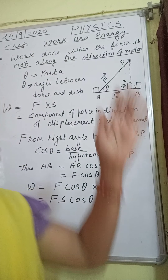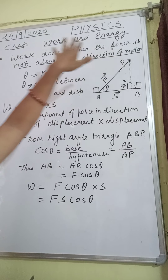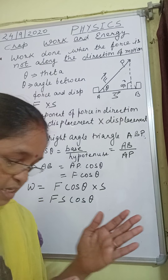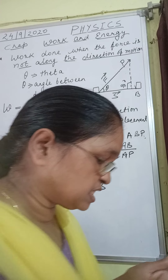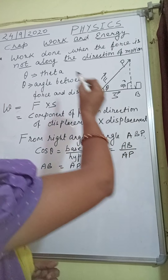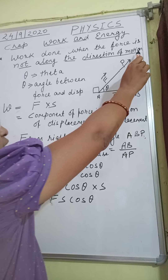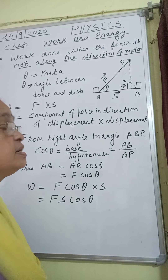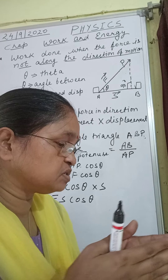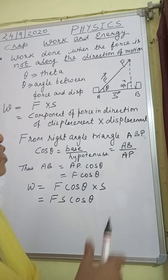Today I will teach you work done when the force is not along the direction of motion. I am applying force in one direction and moving in the same direction, but what happens when the body is moving not along the direction of the applied force — that is, the motion of the body is not along the direction of force applied. So let us see this tutorial.